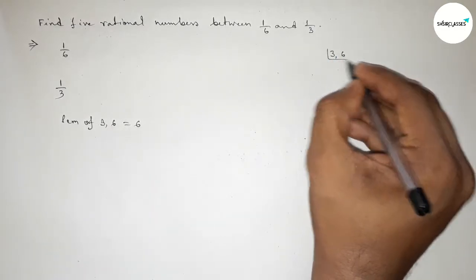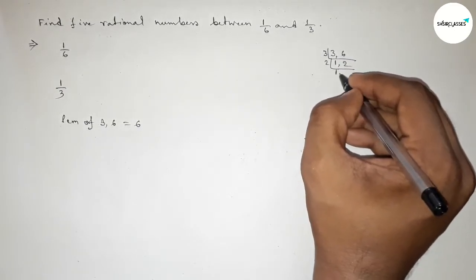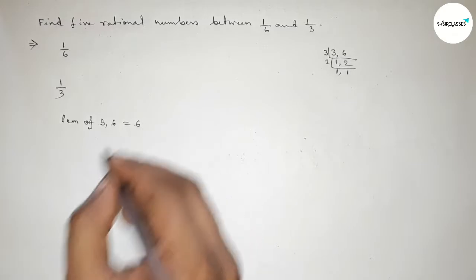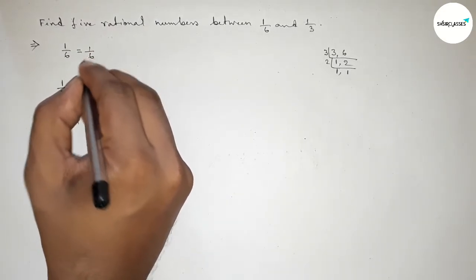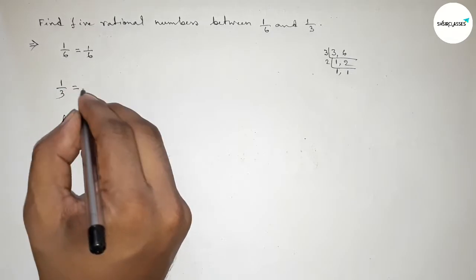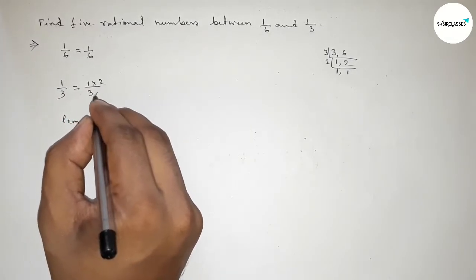Now discussing here, so first factorizing by 3 and then divided by 2, so now taking the multiplication, so obviously 6. So first we have to multiply here by 1, so 1 over 6, and here multiplying 2 by this way, so this is 2 over 6.